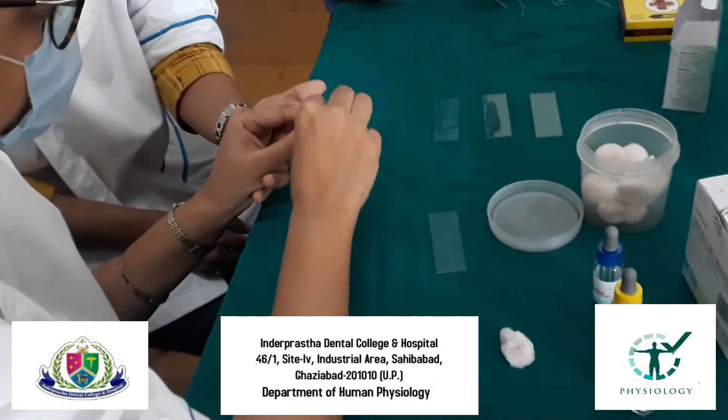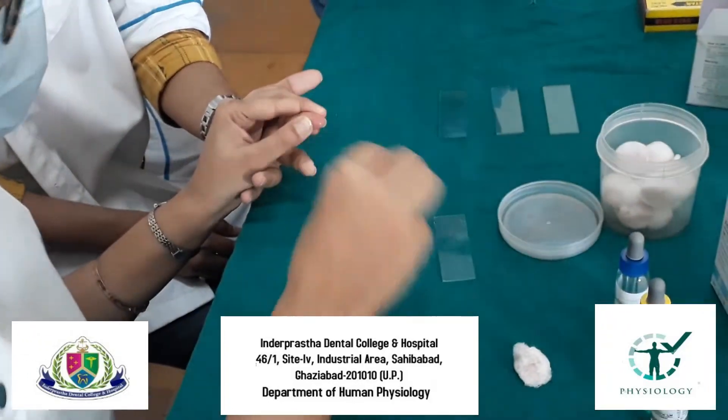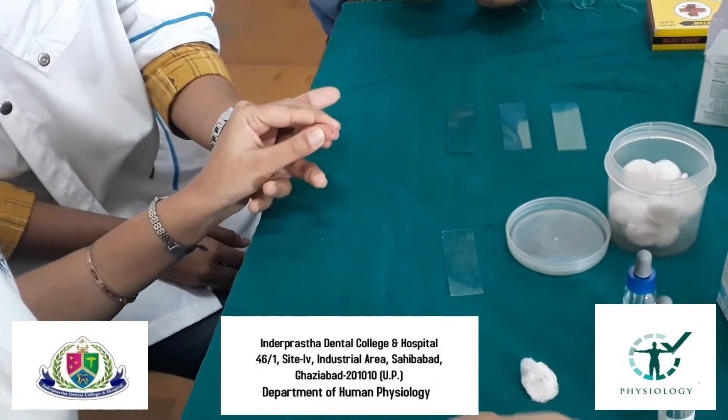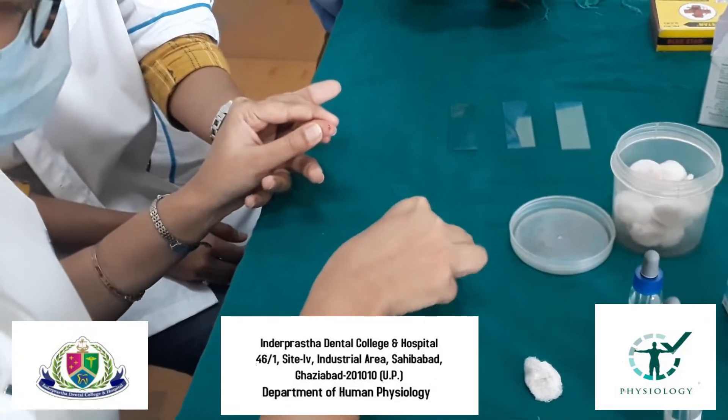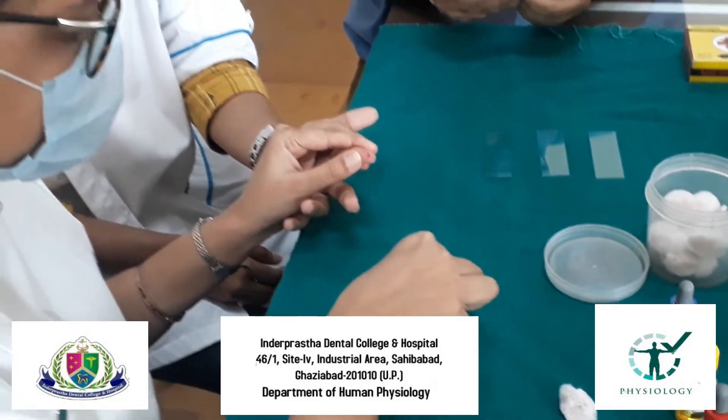We need to remove the first drop of blood with cotton and take the sample from the second drop of blood.